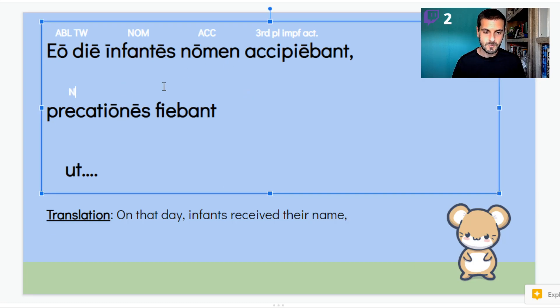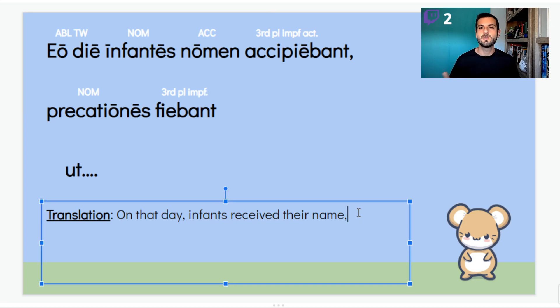Precationes fiebant. Precationes. Precor is to pray. So preces, or precationes, are prayers. And the verb fio, which is a weird verb, remember fio is the passive of facio. So facio means to do or to make. So fio means either they were made, or they happened, is another way that you can translate fio. So precationes fiebant. Prayers were made. Prayers were, and again, you can vary it up what you want to say in English. Prayers were what? Prayers were offered. Prayers were given. Prayers were recited. Whatever verb here makes the most sense in English. So I would say prayers were said. Prayers aren't really made in English, right? Prayers are said. Prayers are delivered. So you want to pick some action verb that works in this situation.